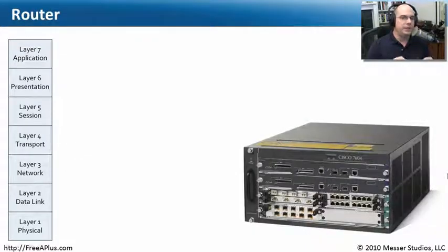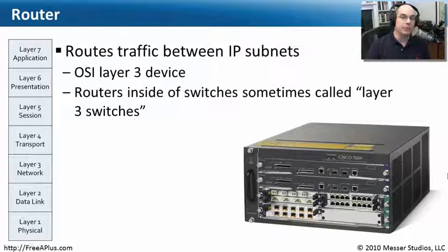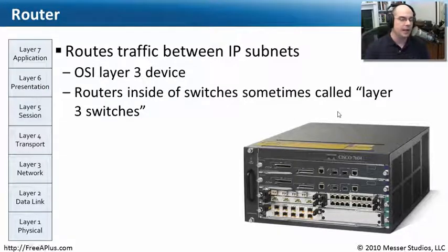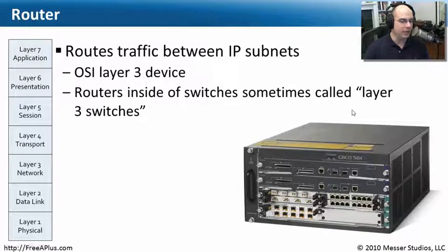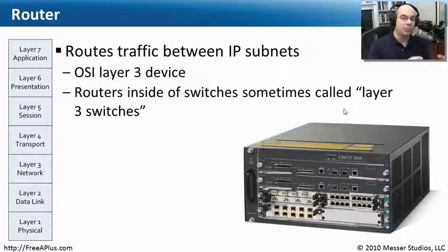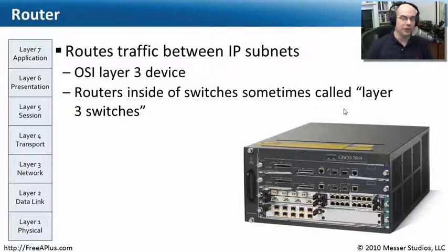If you ever need to communicate outside of your local subnet, you're going to need a router. A router's job is to communicate between IP subnets. We sometimes refer to this as a layer three switch — not really an accurate term, but it works at layer three. A layer three switch and a router are exactly the same thing, so don't be confused if somebody uses that term. Occasionally a switch may have the capabilities to also do routing — that's how that term came about.